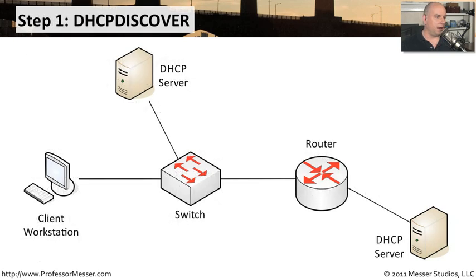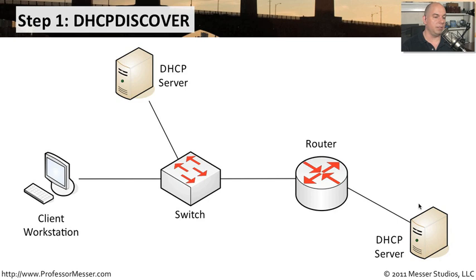On this network, I've created a picture of a relatively large network. It has a client workstation, a switch in the middle, a DHCP server on our local network, and a router that connects out to other parts of the network where there might be another DHCP server. This is something you commonly see in very large environments where you may need redundancy in your DHCP server.